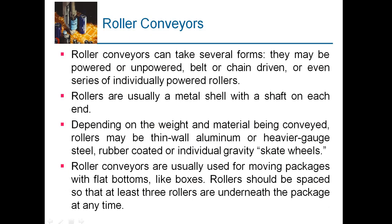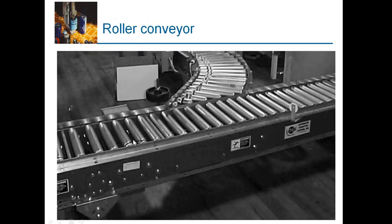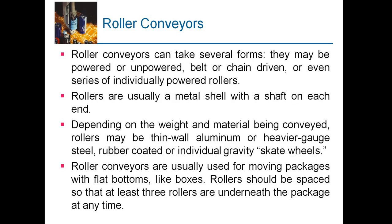The next type is the roller conveyor. In a roller conveyor, some rollers are powered — not all. Depending on the size of the product, the powered roller will push the product to the next roller, and due to this pushing force it moves along the idler rollers to the next powered roller, transporting the product. Rollers are usually metal shafts powered by belt, chain drive, or as individual powered rollers, depending on the weight and material being conveyed.